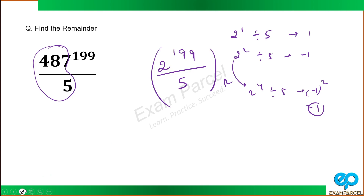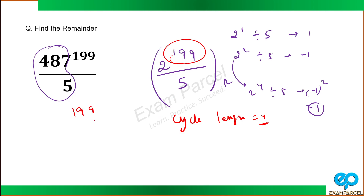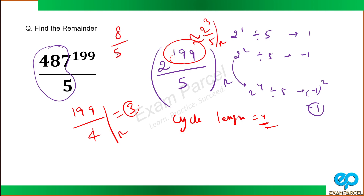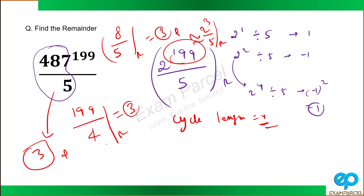If I square minus 1, I get 2 raised power 4 divided by 5 with remainder minus 1 squared, which is 1. It means the cycle length is 4. So 199 divided by cycle length 4 gives a remainder of 3 — since 4 times 49 is 196, remainder is 3. This is equivalent to 2 raised power 3 divided by 5. So 8 divided by 5 gives remainder 3. The correct answer is 3.